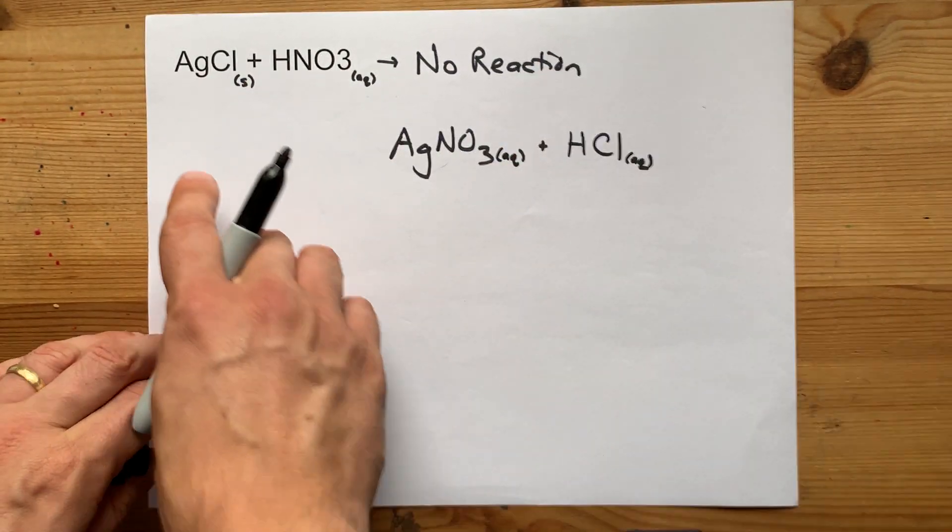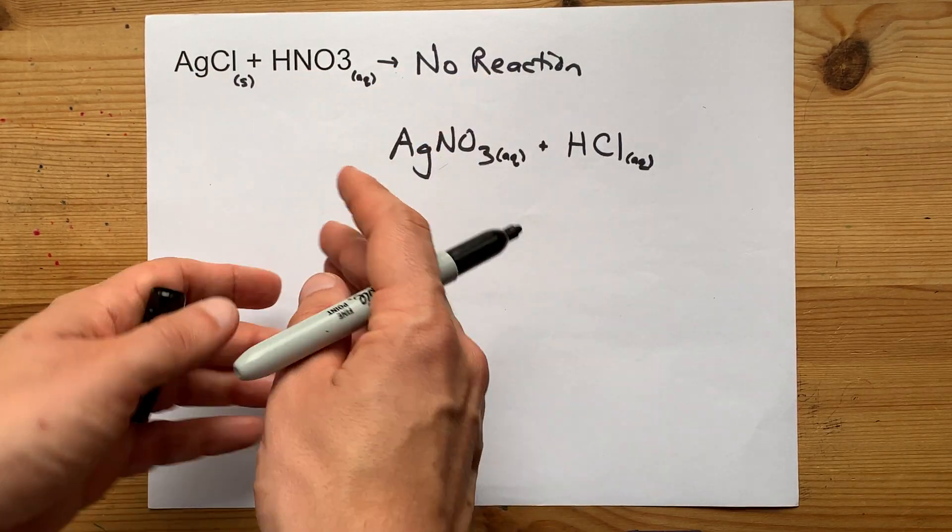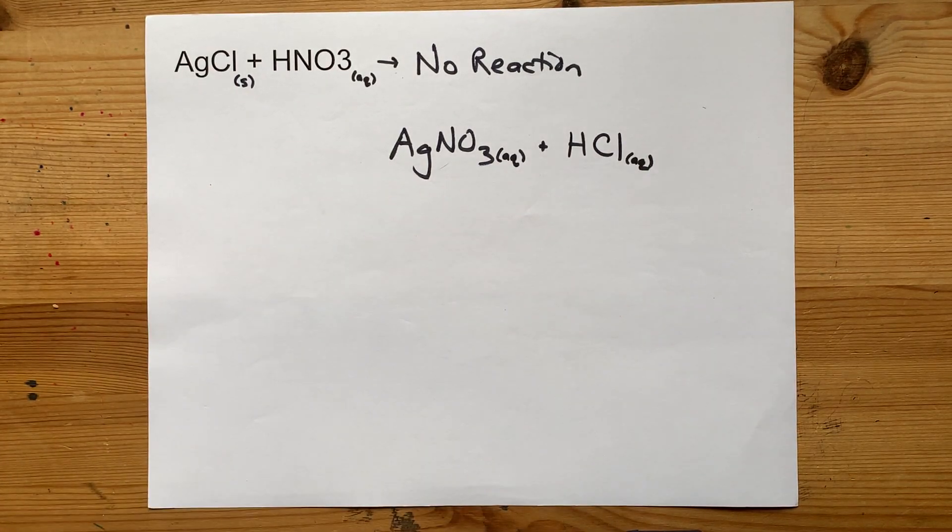So the answer to your question, what does silver chloride and nitric acid do when you mix them? Nothing. Thanks for being with me and best of luck.